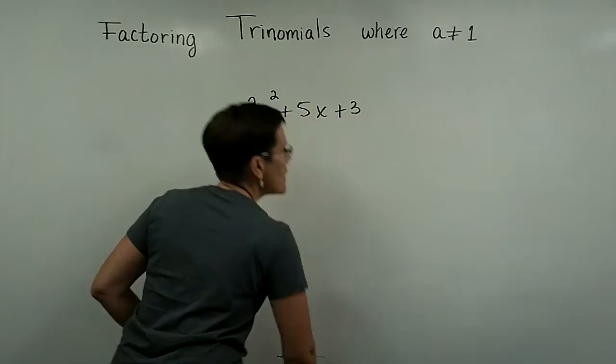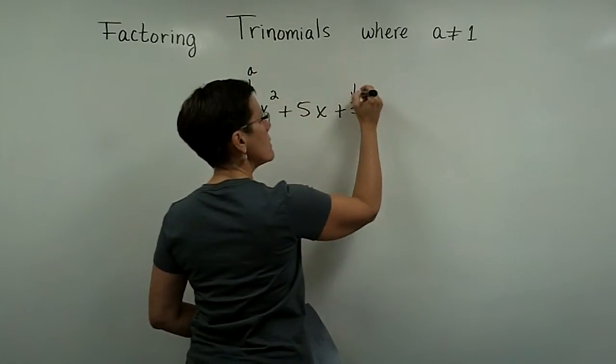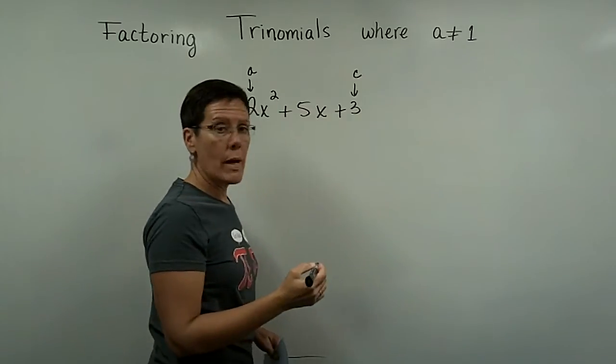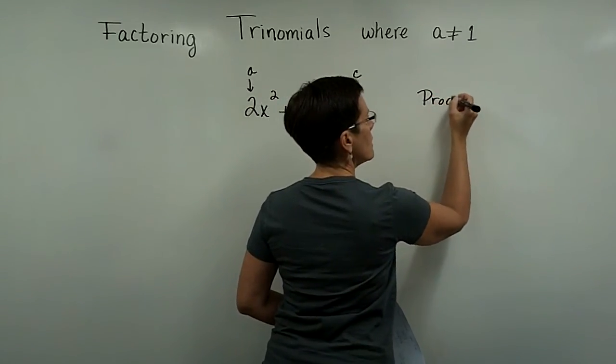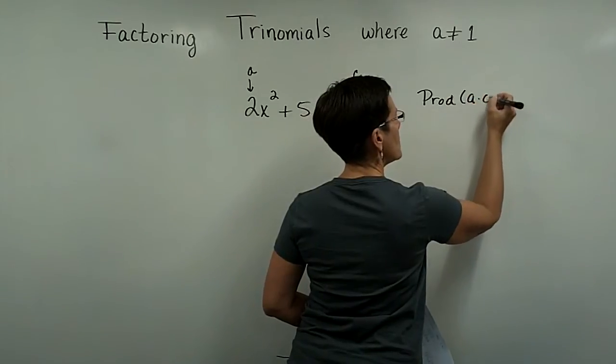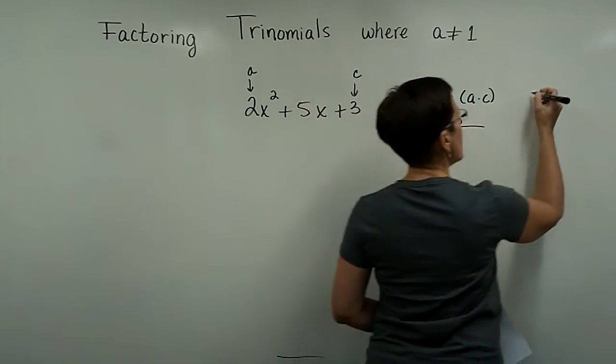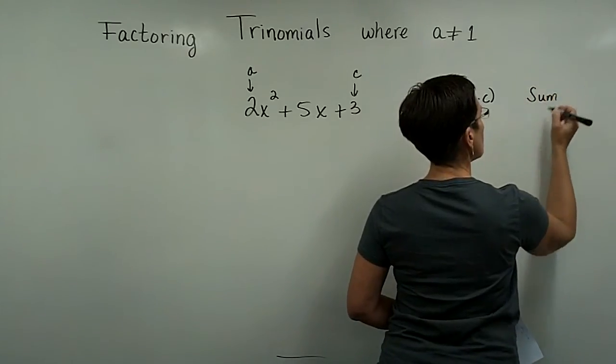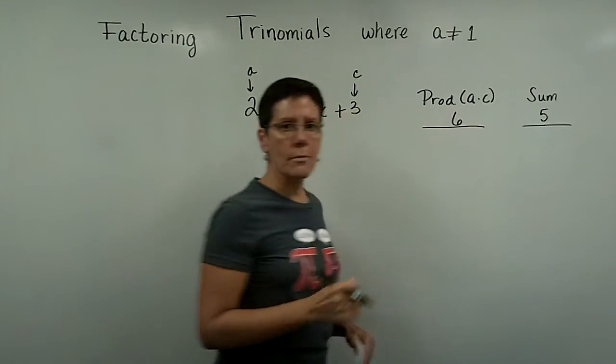But I would like to offer an alternative to this and that is a method that works every time. And that is to take this A value and this C value and multiply those together. So find two numbers whose product is A times C. In this particular case, product is the number 6. And those two numbers that you find have to add to be the middle coefficient, which in this case is 5.